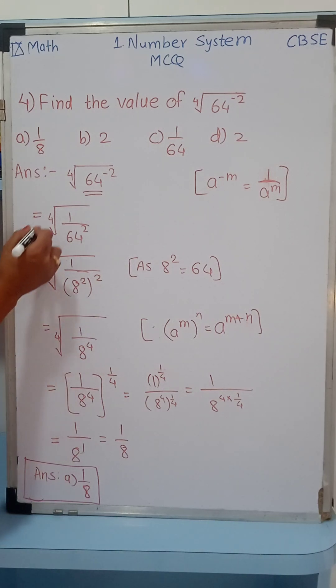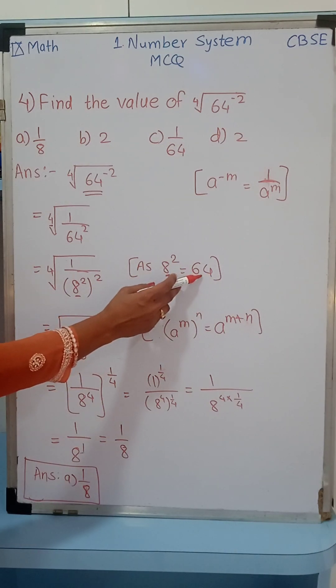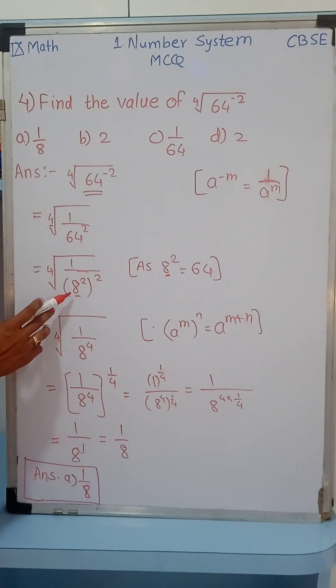Now, again, this is the 4th power and 64 can be written as 8 squared. So 8 squared equals 64. Instead of 64, we can replace it with 8 squared, so this is 8 squared raised to 2.